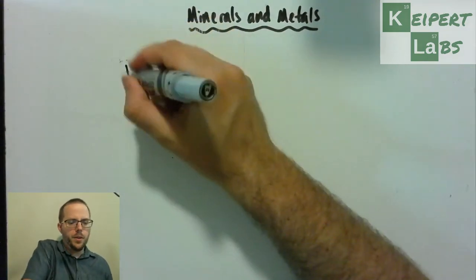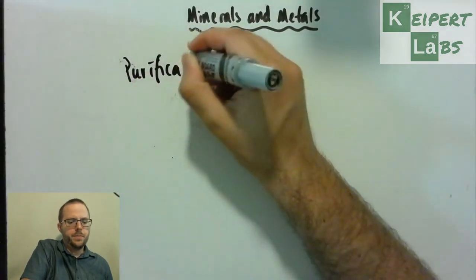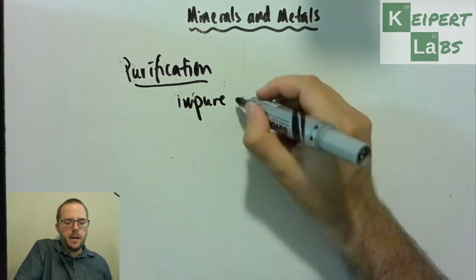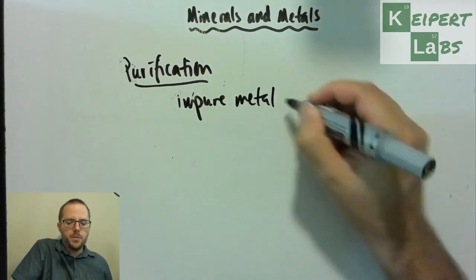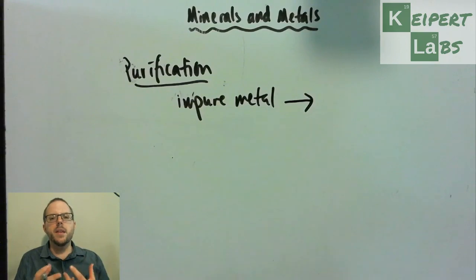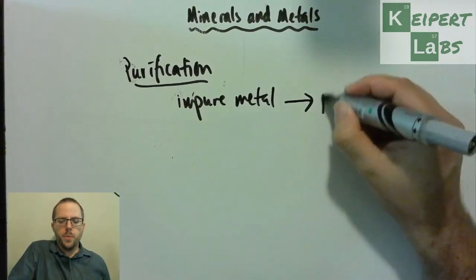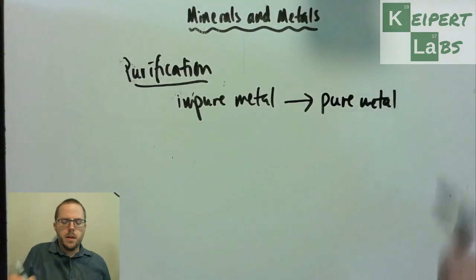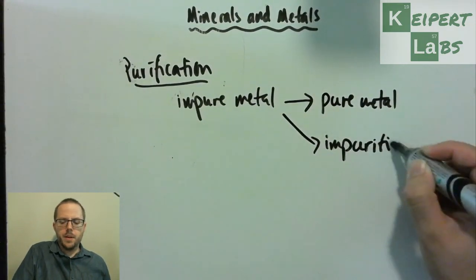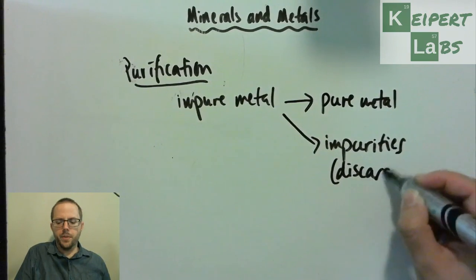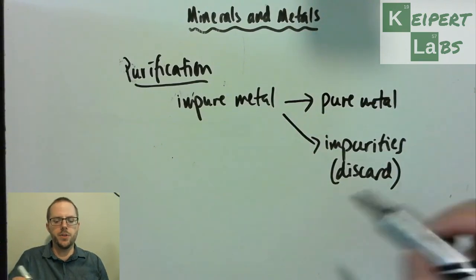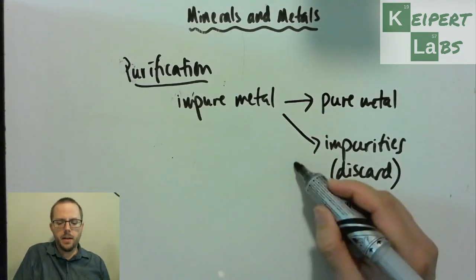And so then we go through this concept of purification. So where we take, where we've somehow separated our metal, but we have an impure. There's lots of other impurities or other kinds of things that are mixed in that are contaminating our sample. And we want to go from impure metal to pure metal by separating out the impurities, which we discard, which we get rid of them. We chuck them out away. And so some sort of a process that we might do there. So there's different things that might come in here.